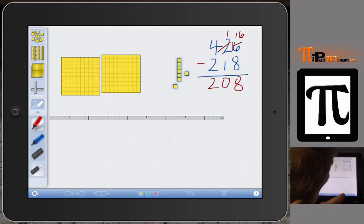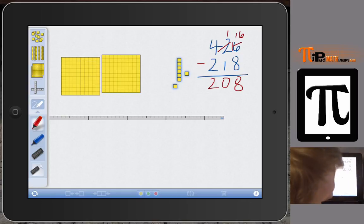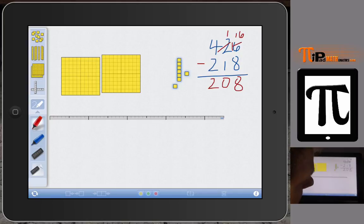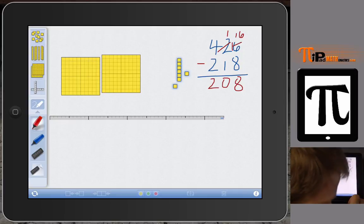So this is how you can use an app and base 10 blocks to help model subtraction and addition. It helps really focus in on the mathematical language that we want students to understand: that they're exchanging, they're regrouping. We should avoid if we can or minimize the language of carrying and borrowing. Or when we say carry and when we say borrow, we want to emphasize the conceptual understanding that is behind that language. So thank you for watching. This is Pi Pad Mathematics and I am Professor Lamb.